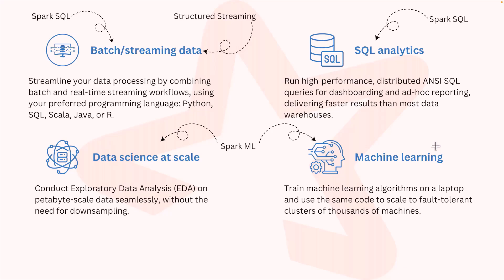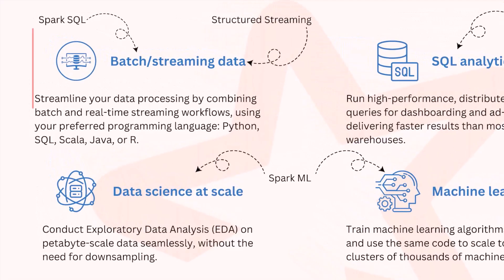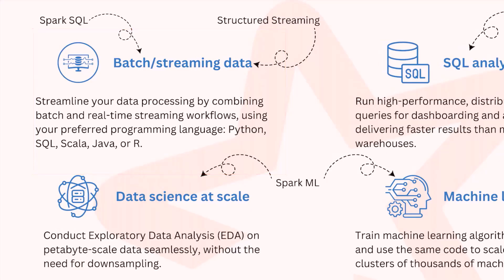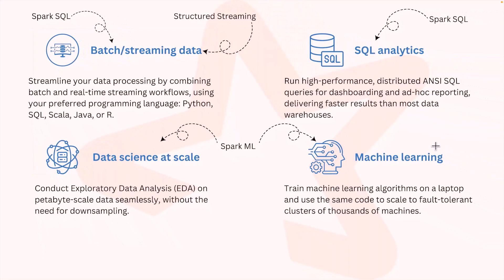For example, you will be able to build batch and streaming pipelines using Apache Spark. This is very common in the industry — you might individually build batch and streaming pipelines, or you may even combine them. If you are working on batch pipelines, then you can use the Spark SQL module. Spark SQL is a built-in module that comes with Spark.